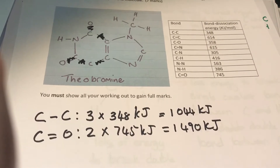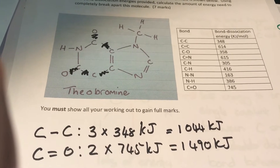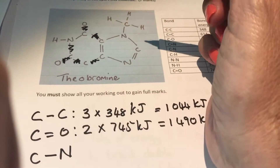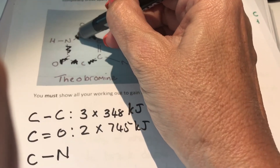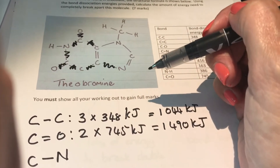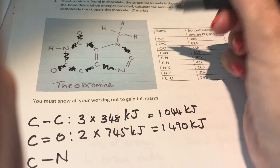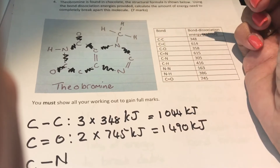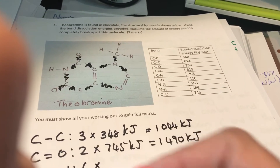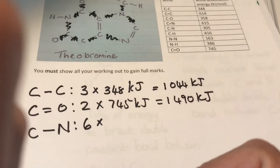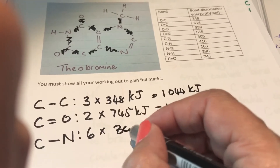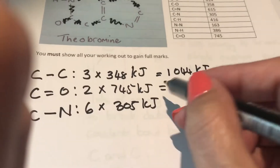The next one that I see here is a carbon single bond nitrogen. So carbon single bond nitrogen: I see one there, here is another one — two, three, four, five, six. I don't see any more, so I have six carbon single bond nitrogen bonds. If I use the table to look it up, I see that it's 305 kilojoules to break one, and I have six.